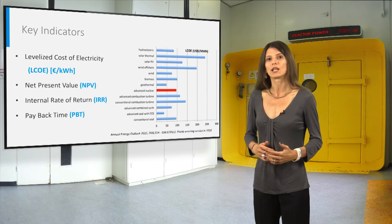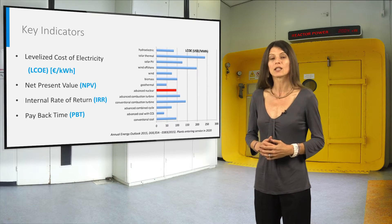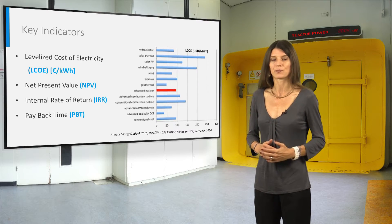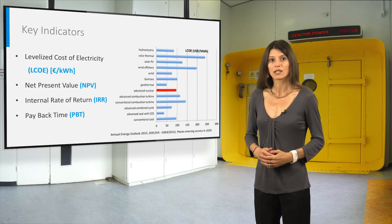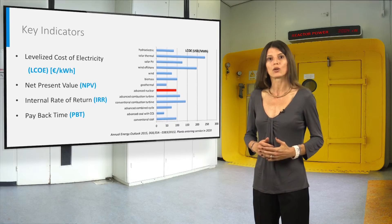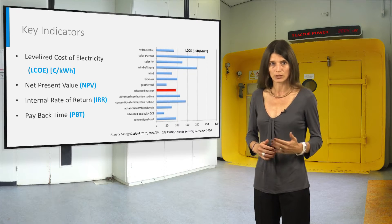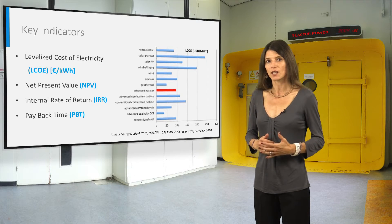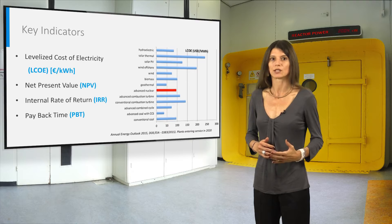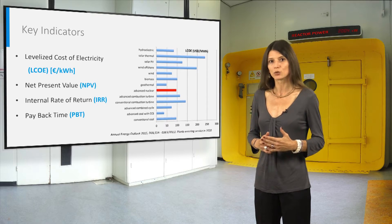The net present value (NPV) is the total value generated by a nuclear power plant during its entire lifetime. The internal rate of return (IRR) is the profitability ratio of the nuclear power plant project — cash flows generated by the project are compared to the capital investment. The payback time is the time when accumulated earnings equal the accumulated costs.